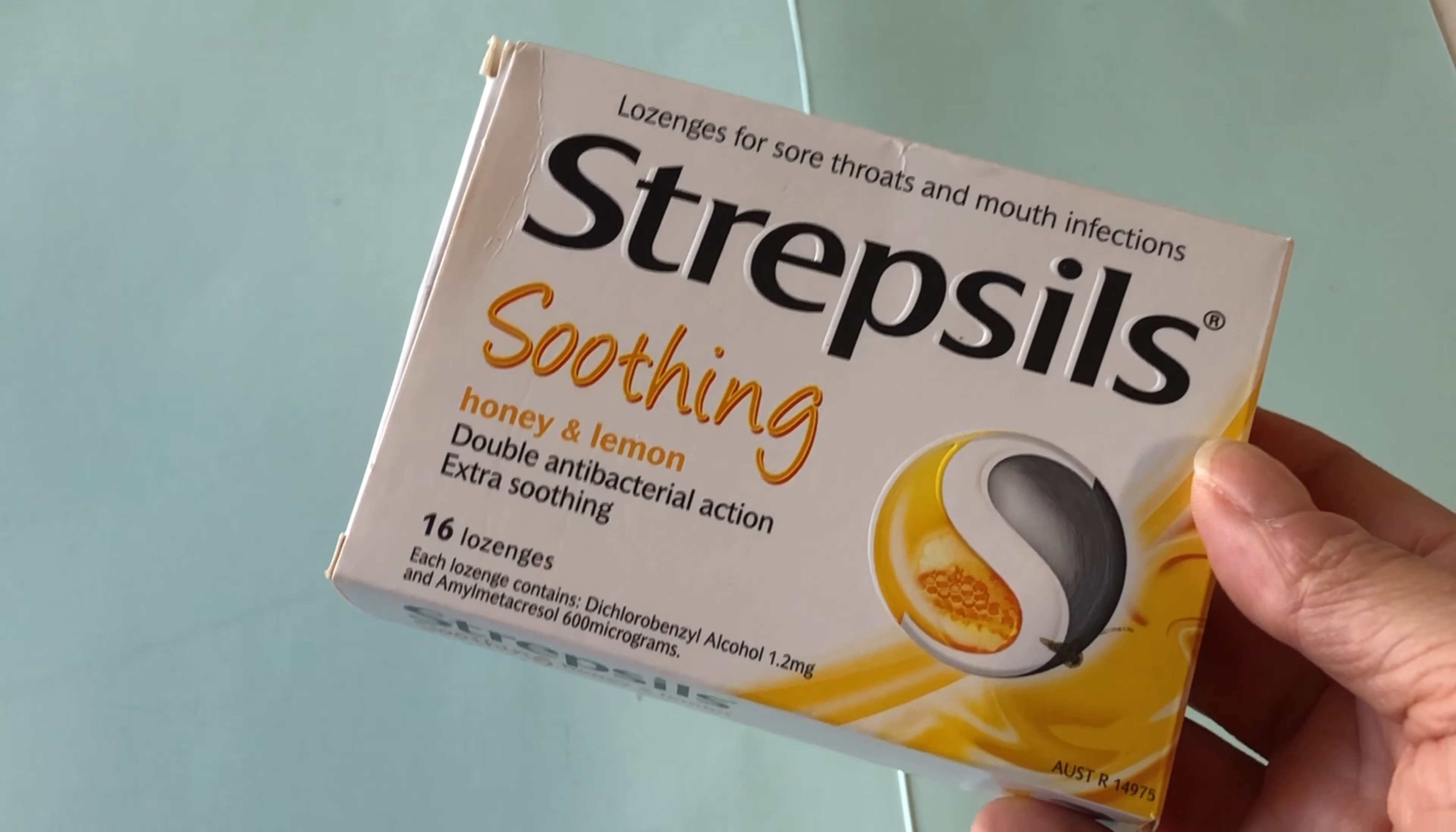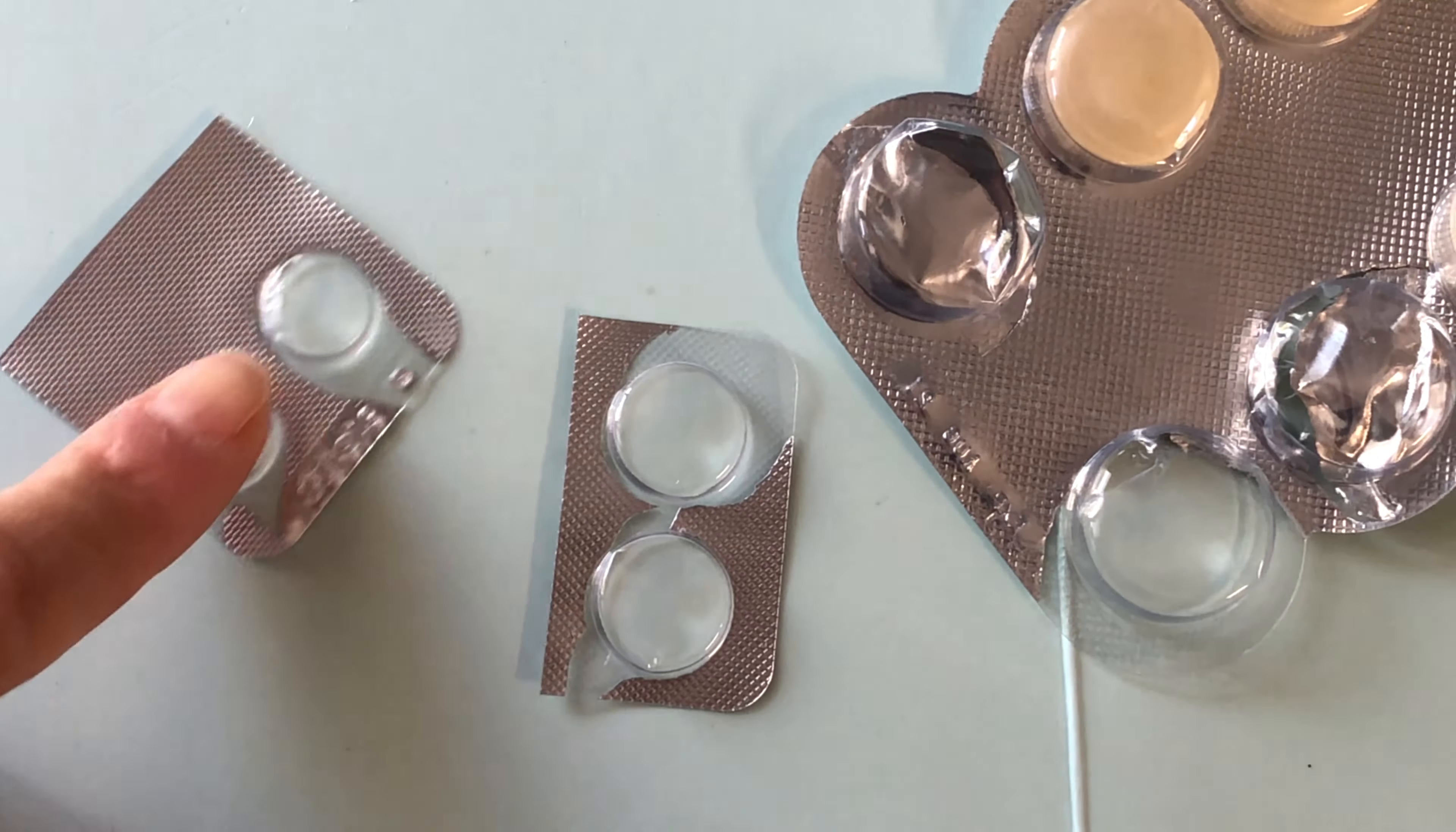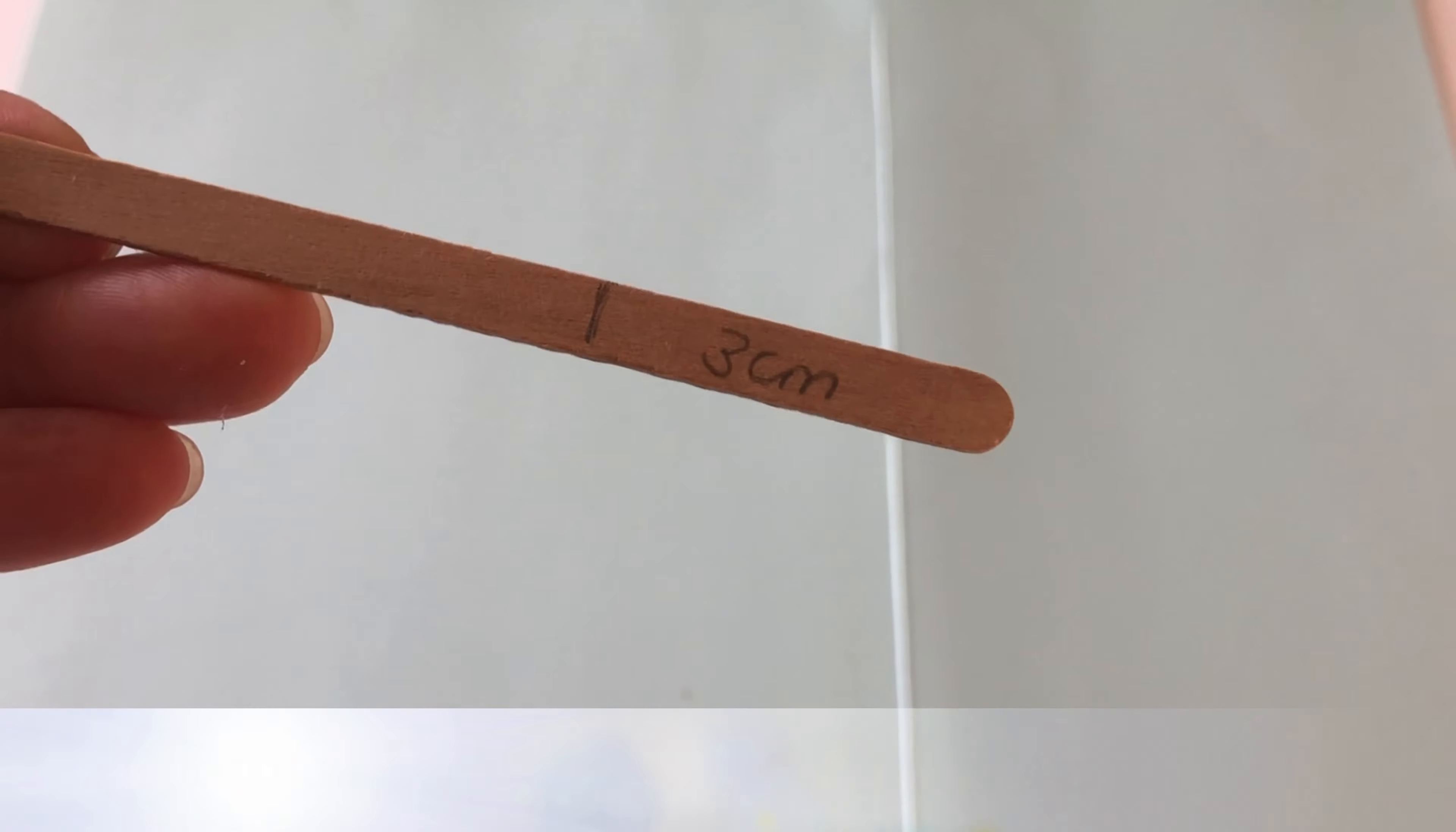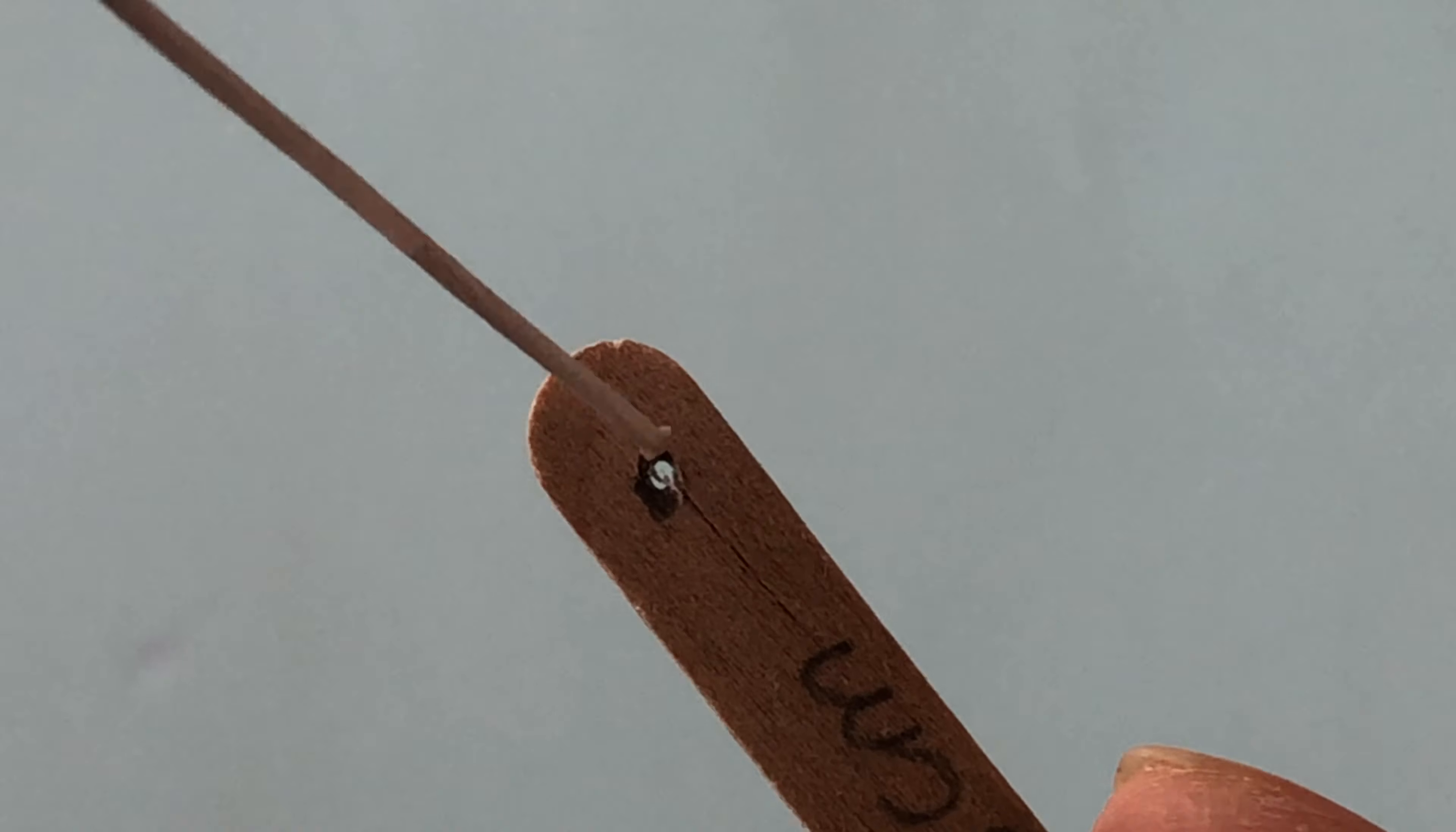To make a set of measuring spoons, we searched our pantry for empty blister packs of cough drops. Look for a variety of sizes to replicate the descending size of measuring spoons. Cut out one from each packet, then carefully cut around the edge. If needed, remove the foil. For a handle, cut a three centimetre length off the curved end of a skinny stick. With a piercing tool, make a small hole near the top curve so we can thread through the florist wire.